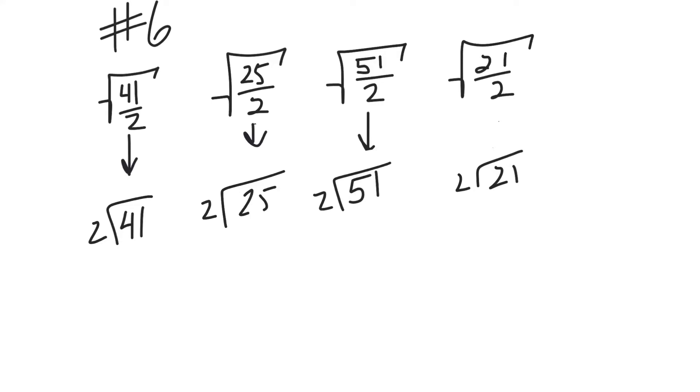Alright, for number six we're trying to find which one of these falls between four and five. One of the things you should see is that inside your square root you have improper fractions. We have to change those to mixed numbers. From that mixed number we're just going to look at the whole number because the fraction really doesn't matter—it's too small.